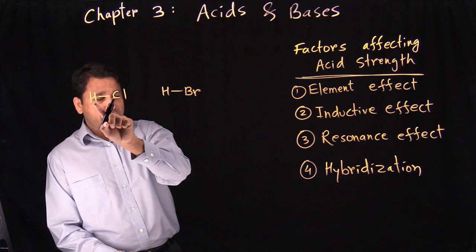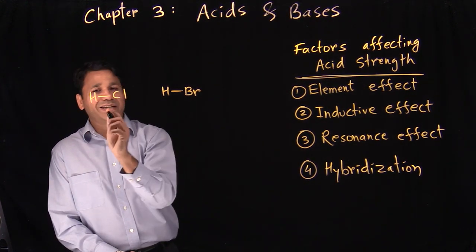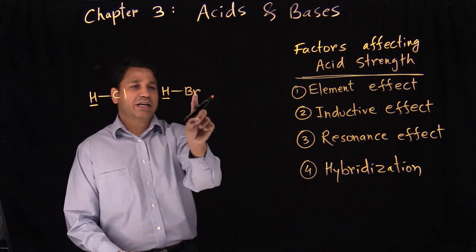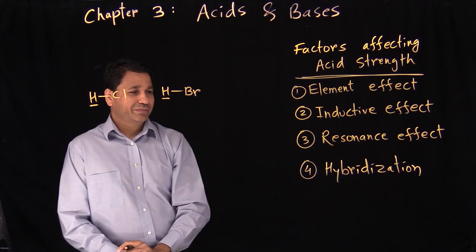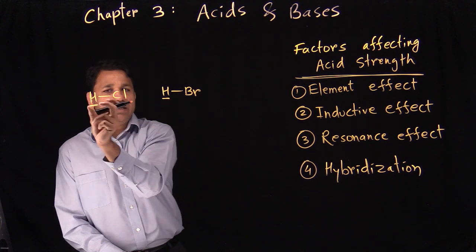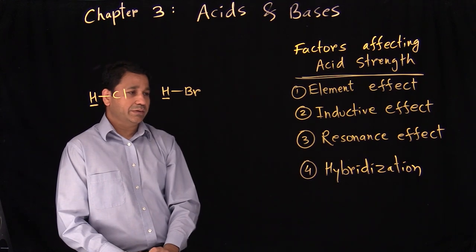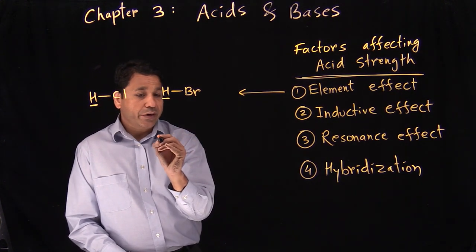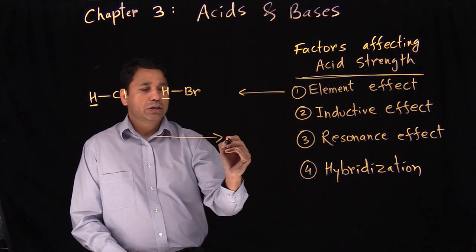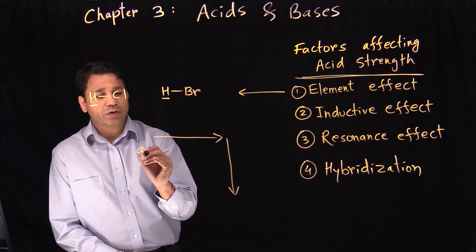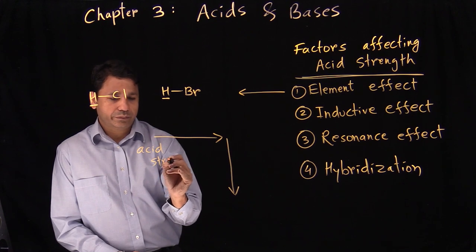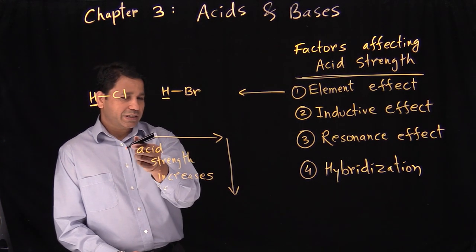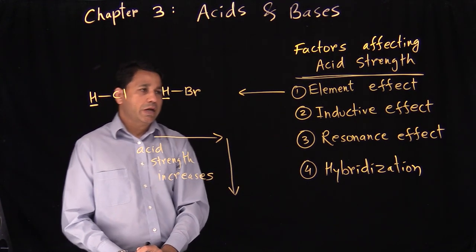If you have HCl and HBr — anything with a proton is an acid, so your acid here is the hydrogen. Here it's attached to chlorine and in this case attached to bromine — two different elements. That's an example of element effect. In element effect, acid strength increases left to right and top to bottom in the periodic table.